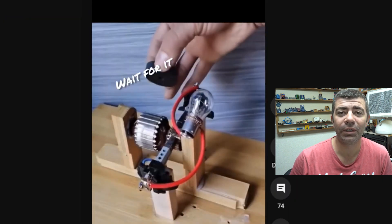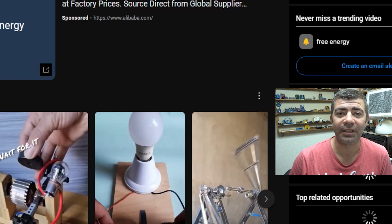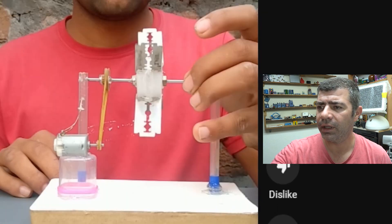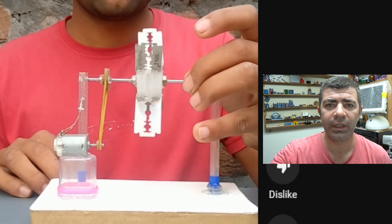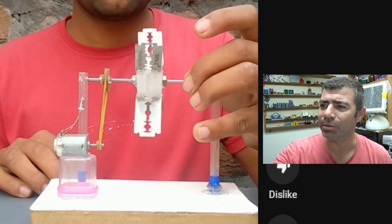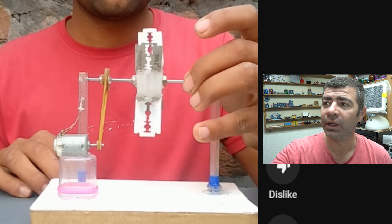The first video we're gonna watch together is this guy. Okay, we're gonna watch the video together and you can see that he made a free energy device out of a small DC motor with belt and propeller made out of razor blades.